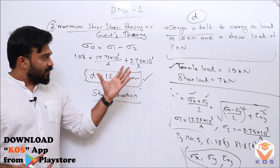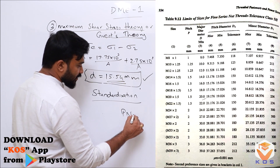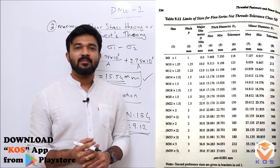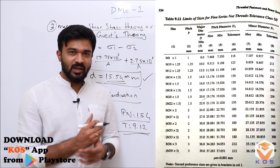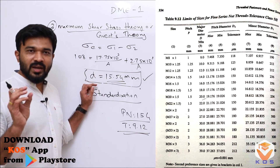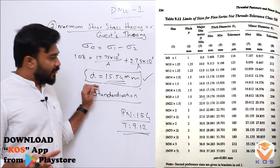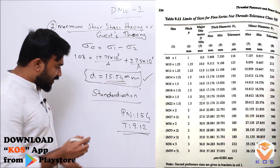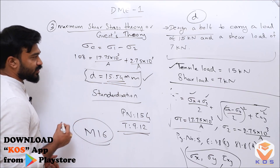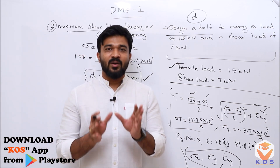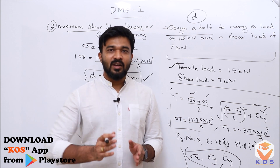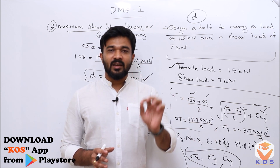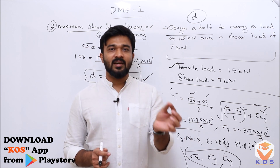We go to page number 154, table 9.12, which lists standard bolt diameters. The available sizes include M14, M15, M16, and so on. Since our required diameter is 15.54 mm and the next standard size is 16 mm, we select the M16 bolt — the outer diameter is 16 mm. This is our final standardized answer.